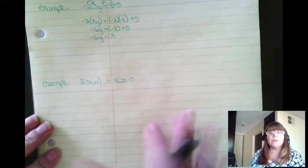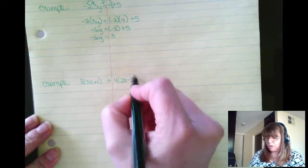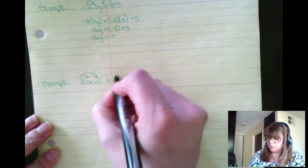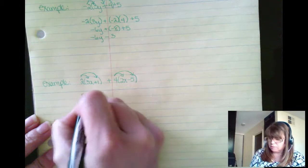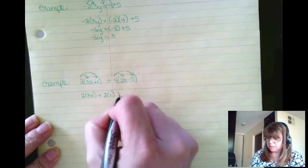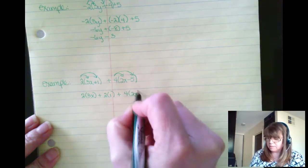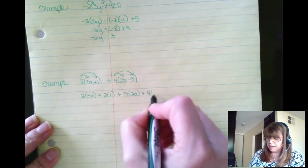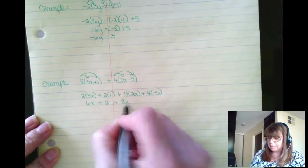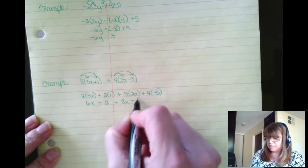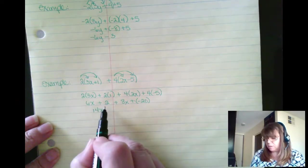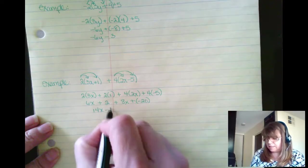So one more example here. We have 2 times the quantity 3x plus 1 plus 4 times the quantity 2x minus 5. I'm going to distribute the 2, and I'm going to distribute the 4. So 2 times 3x plus 2 times 1, and then because they're only connected with addition, I'm going to keep it as addition, 4 times 2x and 4 times negative 5. 6x plus 2 plus 4 times 2x is 8x plus 4 times negative 5 is negative 20. Combine like terms. I have 6x plus 8x, 14x plus 2, a positive 2 plus a negative 20. Take the difference and keep the sign.